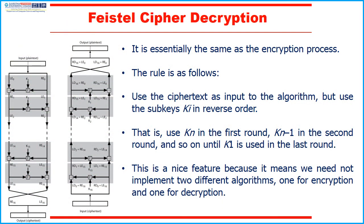Feistel cipher decryption is the reverse of the encryption process. The rules are as follows: use the ciphertext as input to the algorithm, but use the sub-keys KI in reverse order — that is, use KN in the first round, KN-1 in the second round, and so on until K1 is used in the last round. This is a nice feature because it means we need not implement two different algorithms, one for encryption and one for decryption.